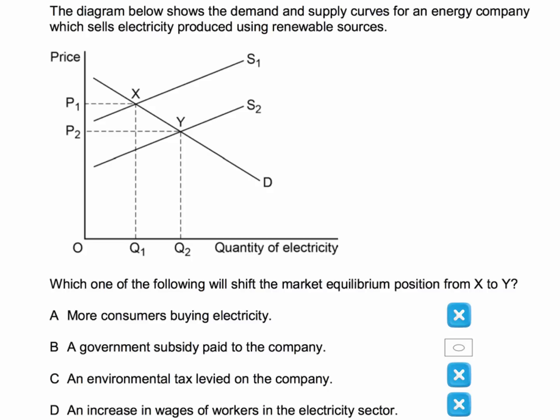An increase in wages of workers in the electricity sector — again, that's an increase in cost, and if the unit cost increases, the supply curve shifts to the left. So by now you'll probably be getting the idea that the correct answer is B: a government subsidy paid to the company. That is indeed the correct answer. If you subsidise the producer, supply costs go down, and that causes an outward shift of supply.